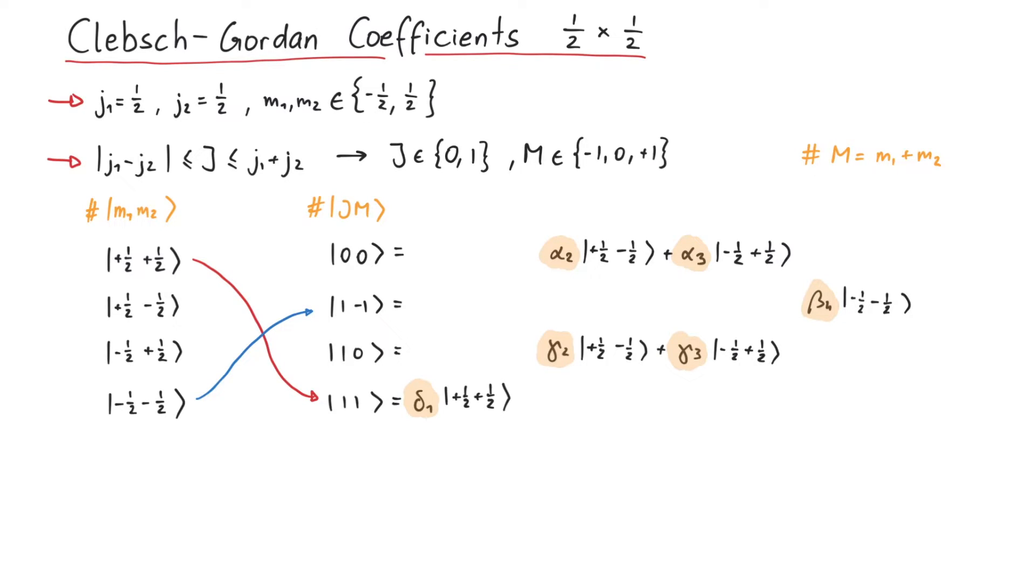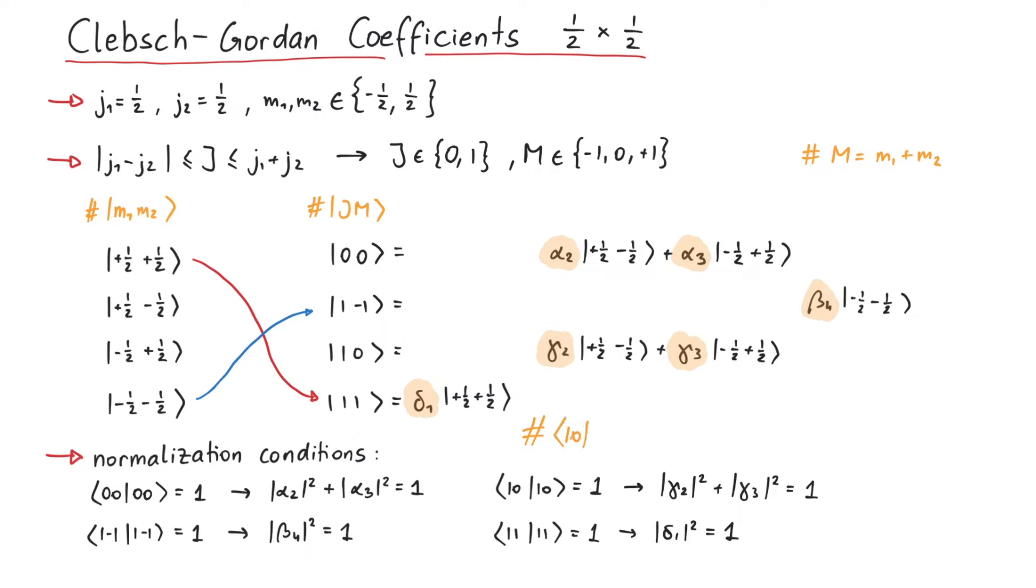Now those constants here are not all independent. In fact, since we want the states to be normalized, we get several constraining equations. Keep in mind that, since we're dealing with complex numbers here, we have to use an absolute square. Next, since 1 0 and 0 0 should be orthogonal to each other, we get another one.